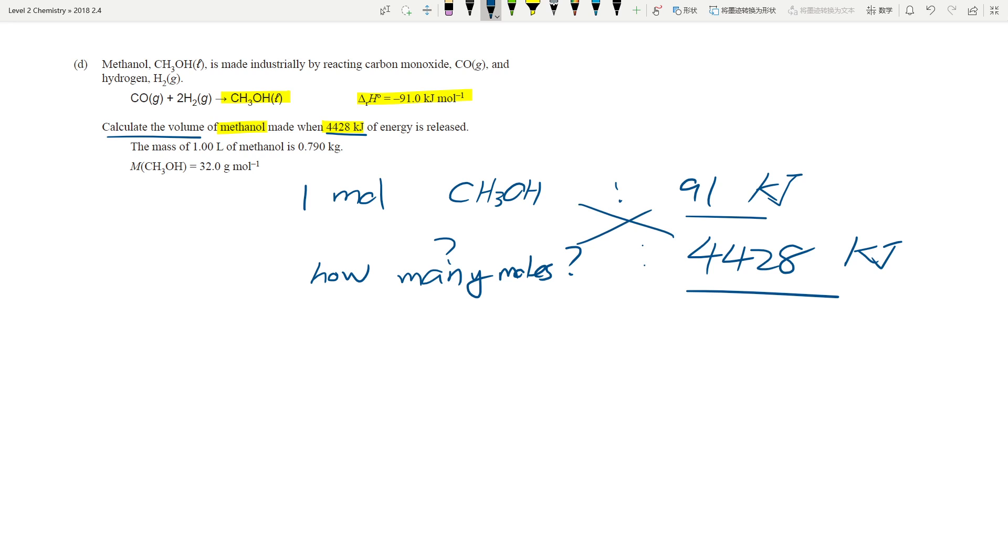So what it means is that if you have one mole of CH3OH releases 91 kilojoules, I now have 4428 kilojoules, how many moles do I have? So you can either do cross multiply, if you're quite savvy with mathematics, you should just be able to see 4428 divided by 91. And that will give you the number of moles, which is going to be 48.7 moles.